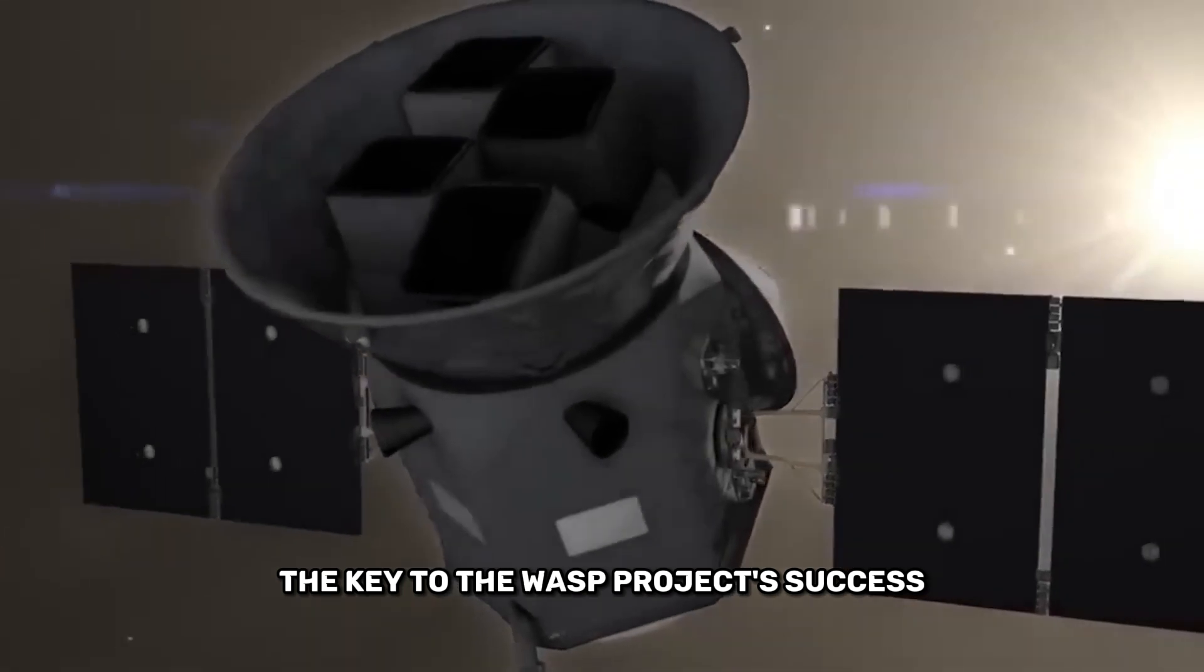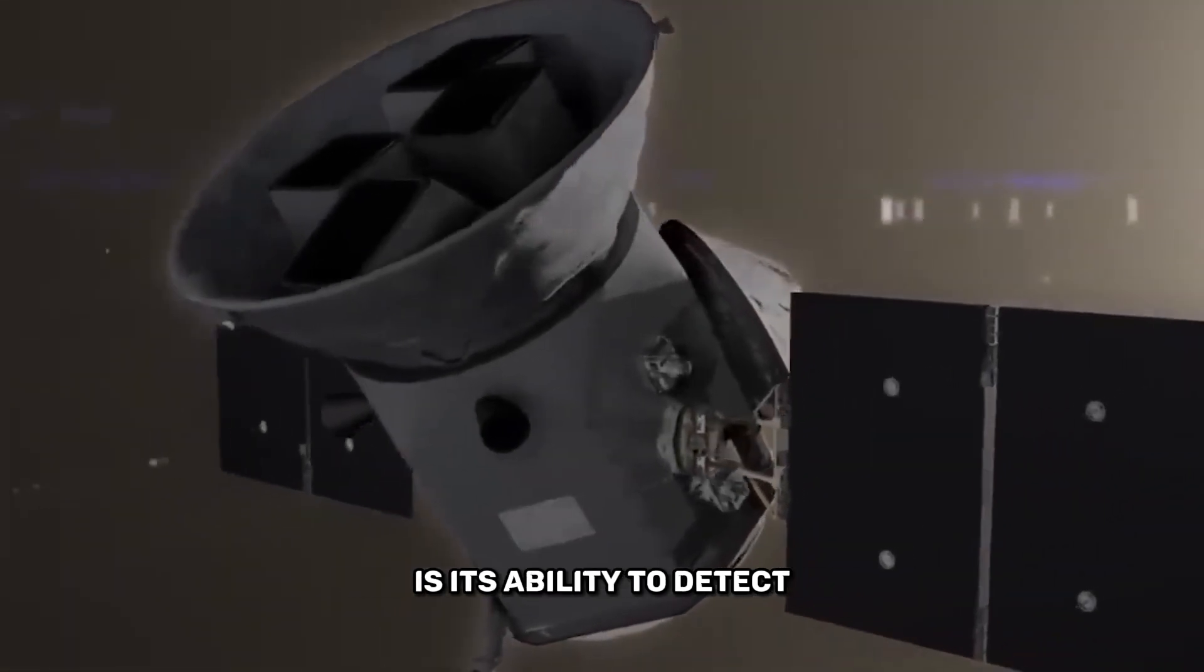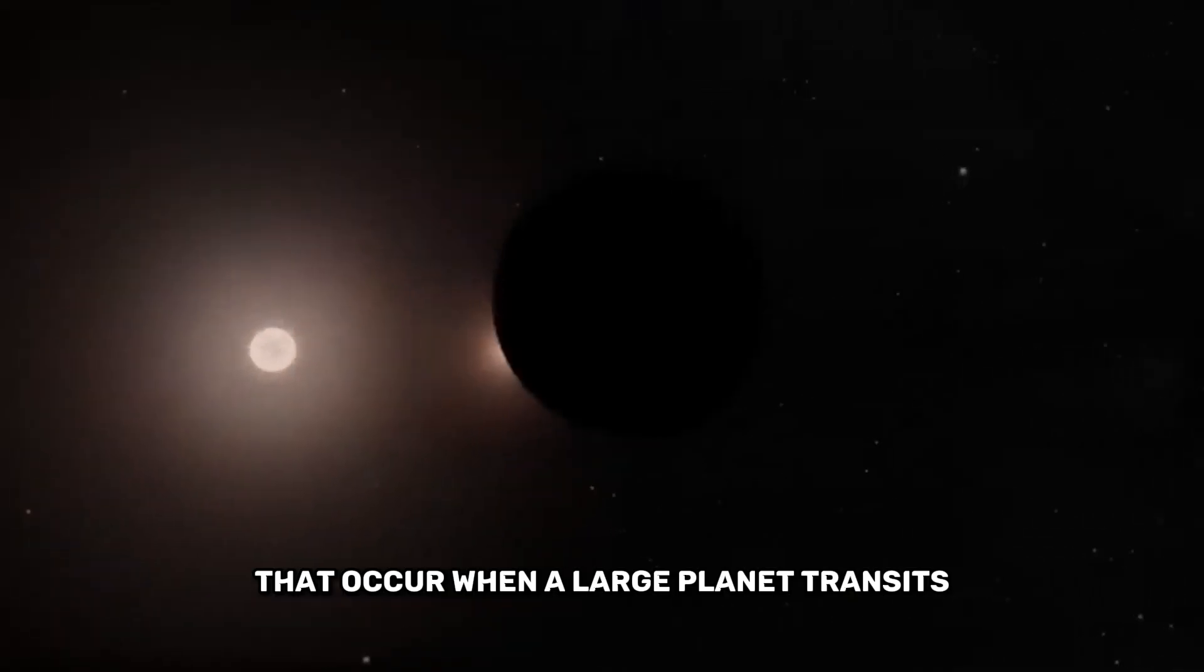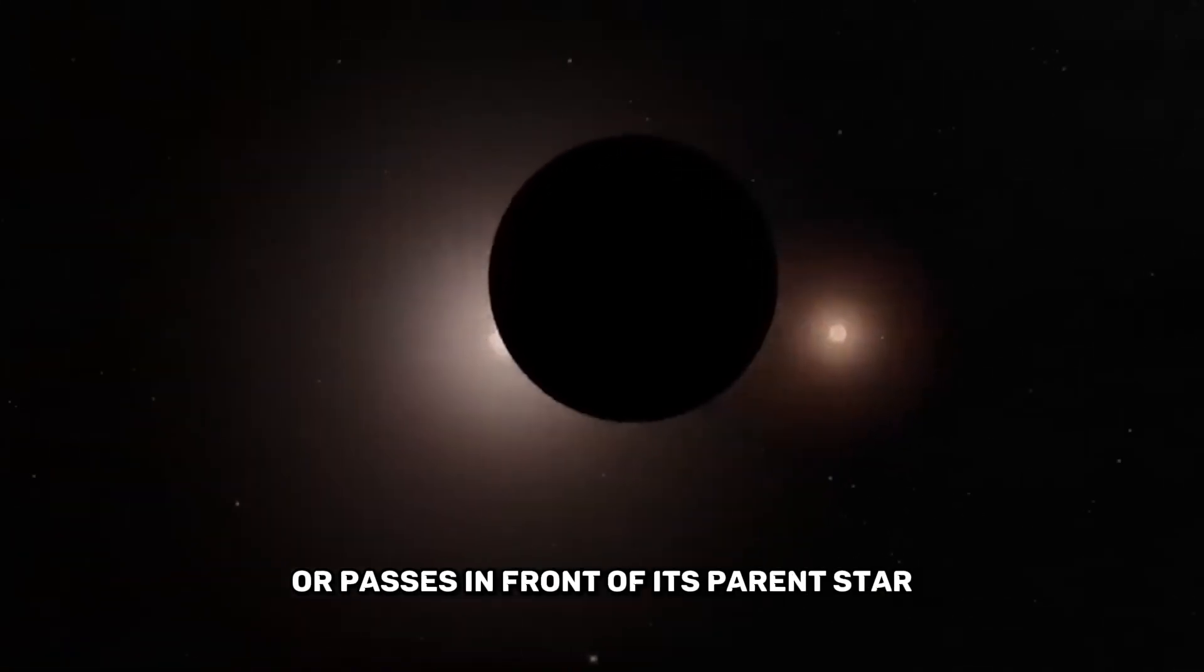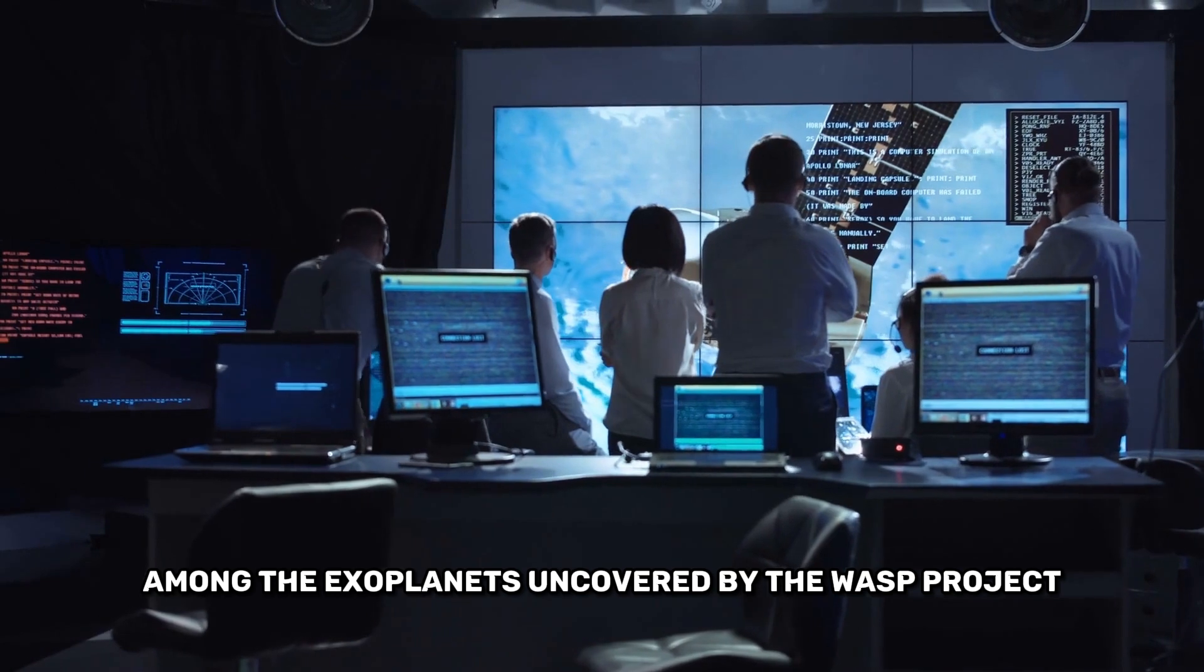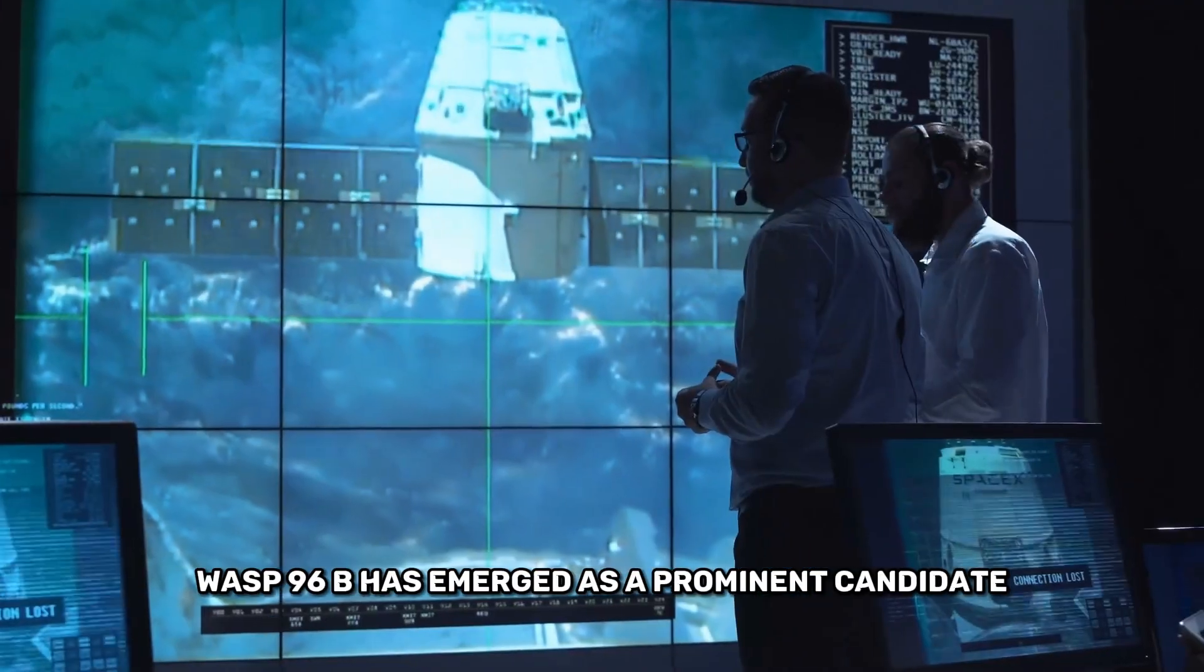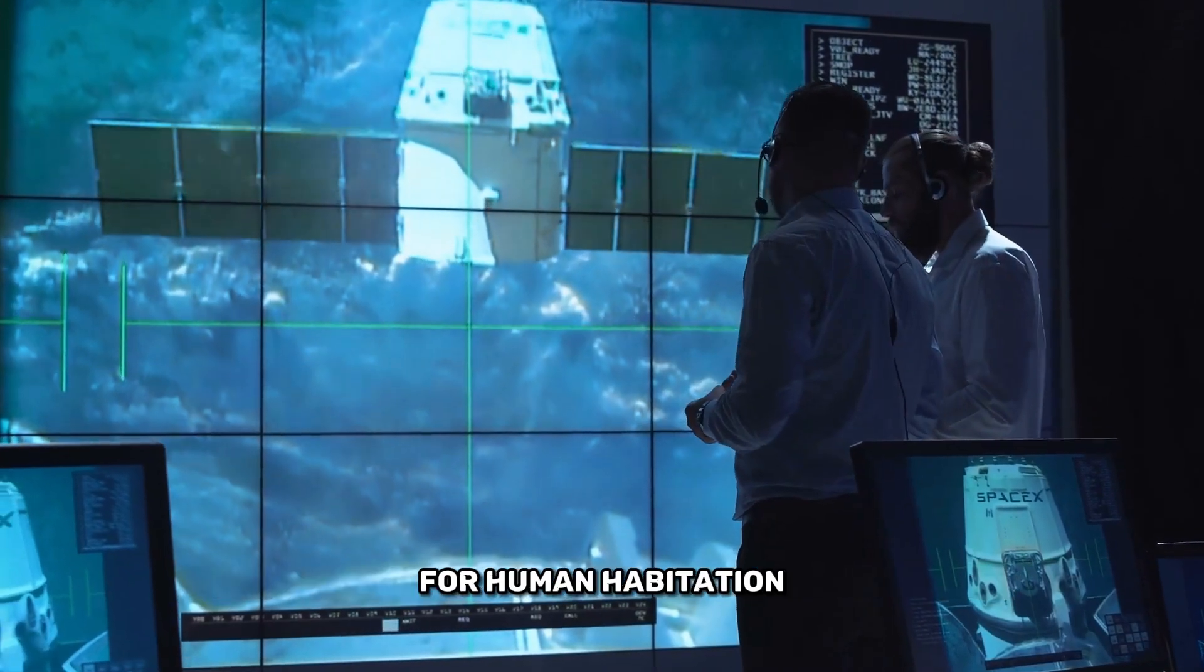The key to the WASP project's success is its ability to detect the telltale dips in brightness that occur when a large planet transits or passes in front of its parent star. Among the exoplanets uncovered by the WASP project, WASP-96b has emerged as a prominent candidate for human habitation.